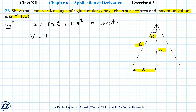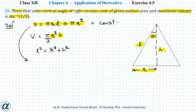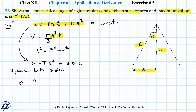We want to maximize the volume V = πr²h/3. There appear to be two variables, r and h, but we can eliminate one using the surface area equation. This equation is slightly complicated because l can be written using the Pythagorean theorem as l² = r² + h². So I modify the surface area equation: S − πr² = πrl, then square both sides to get (S − πr²)² = π²r²l².